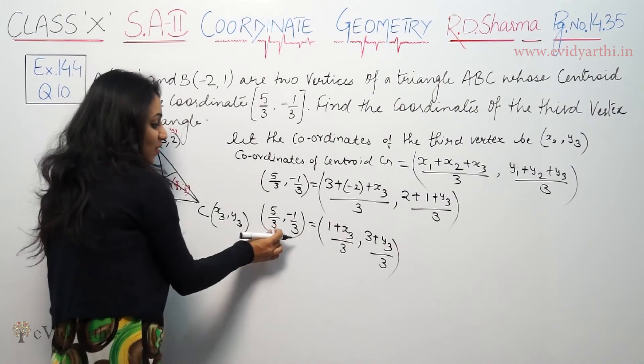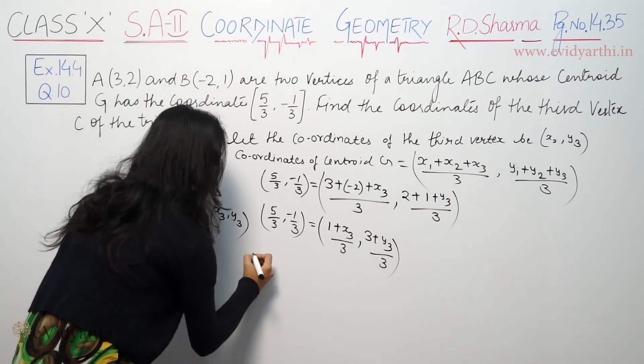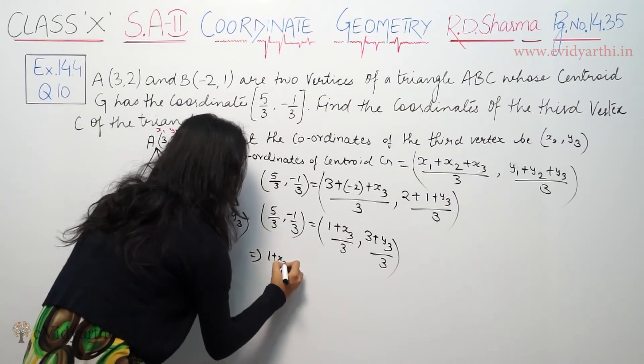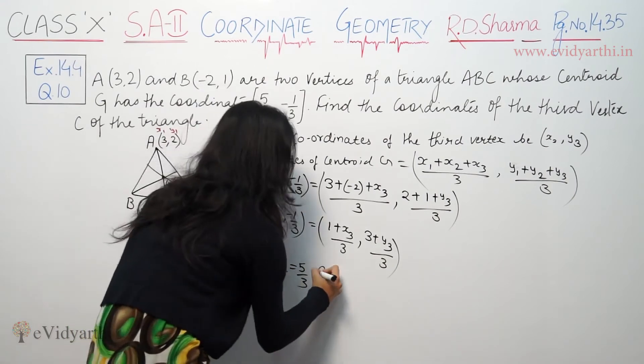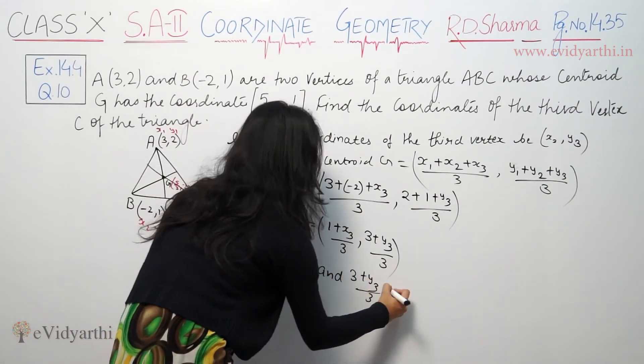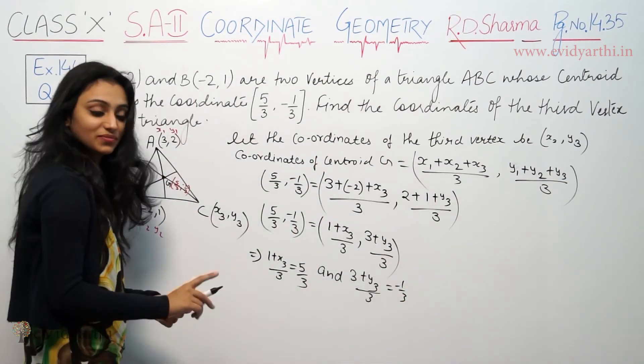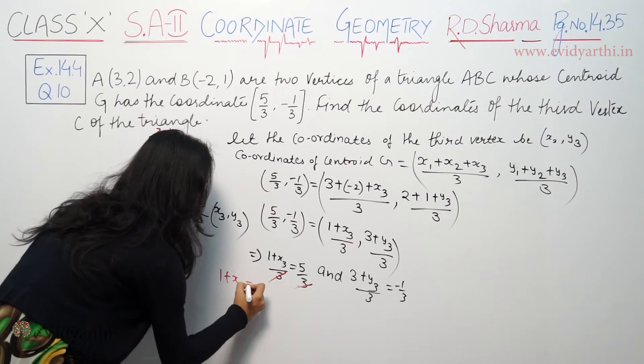Now (1 + x3)/3 equals 5/3. And (3 + y3)/3 equals minus 1/3. Now 3 cancels. So 1 plus x3 equals 5. So x3 is 5 minus 1.